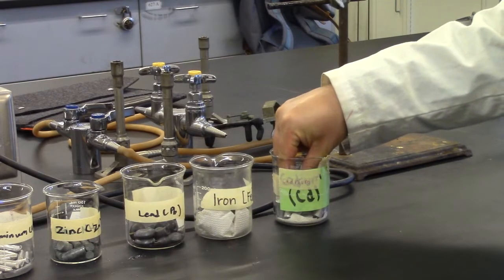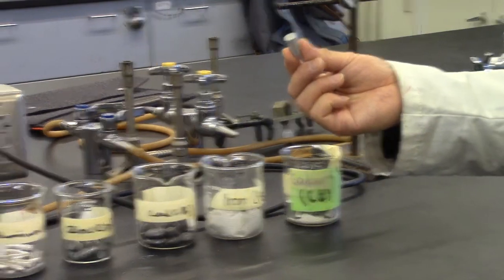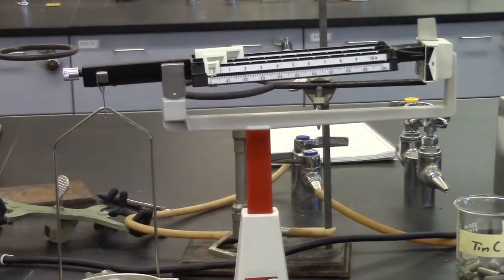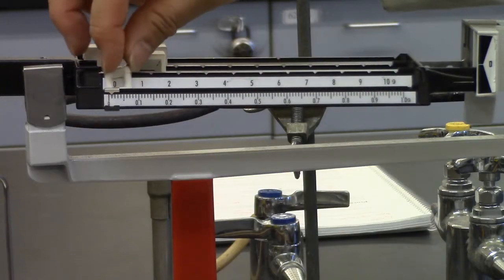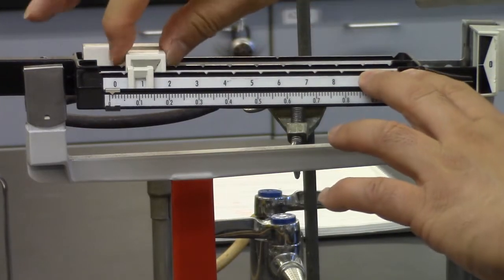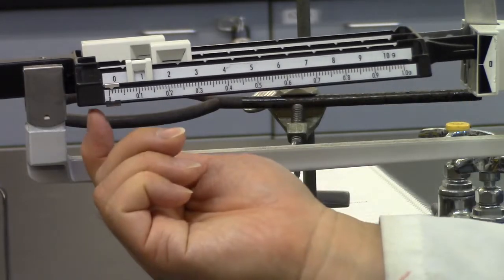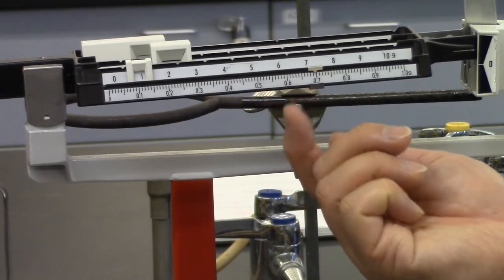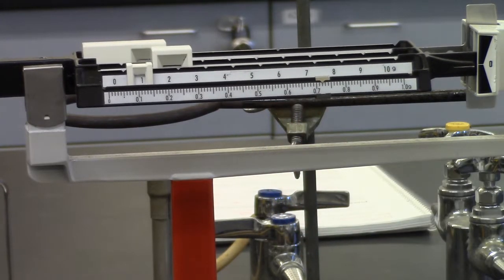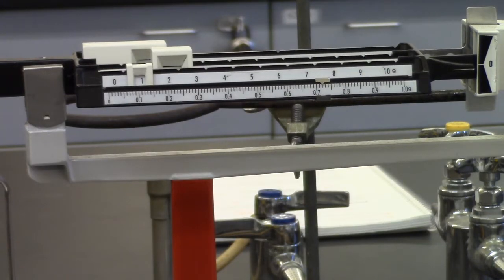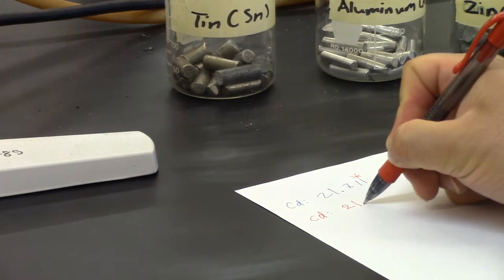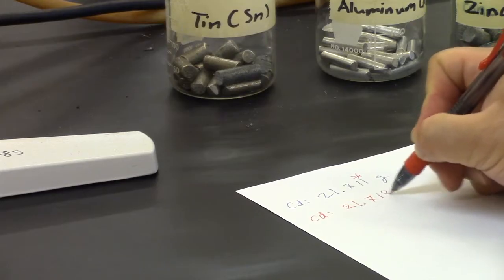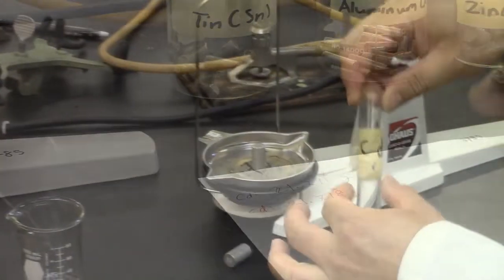Starting with cadmium, we will first determine the mass of the cadmium metal. We write down the mass of the metal in our notebook once we've weighed it.